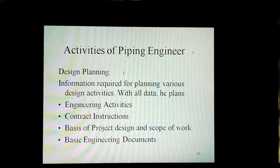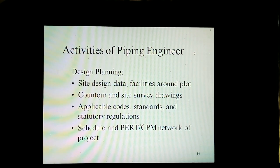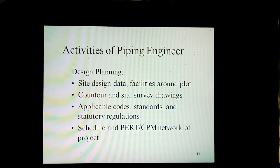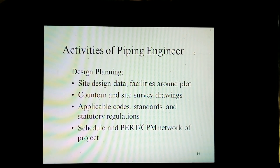Design planning involves getting information required for planning various design activities. With all data, the engineering activities are planned. This includes contract instructions, basis of project design and scope of work, and basic engineering documents. Design planning also covers site design data, facilities around the plot, contour and site survey drawings, applicable codes, standards, and statutory regulations, and schedule and CPM network of the project.